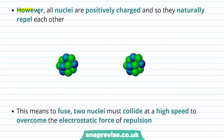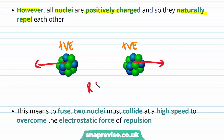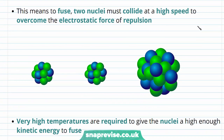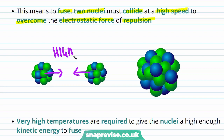However, this is difficult to do because all nuclei are positively charged and so they naturally repel each other. Because both nuclei have a positive charge due to the protons inside them, they experience an electrostatic force of repulsion. This means that two nuclei must collide at a high speed to overcome this electrostatic repulsion.